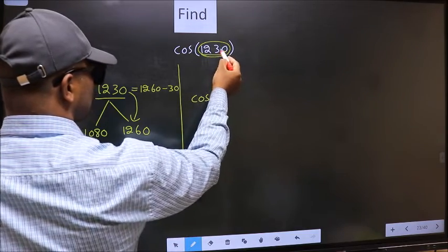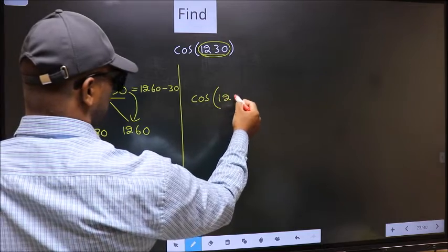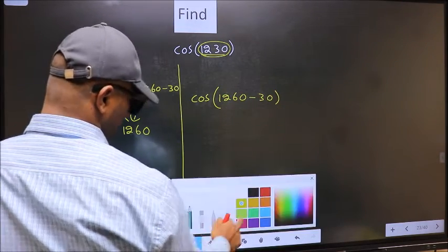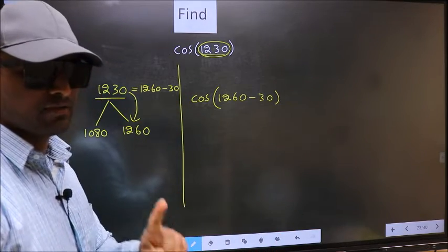In place of this, now we should write this: 1260 minus 30. This is your step 1.